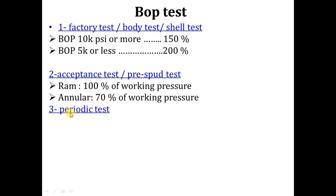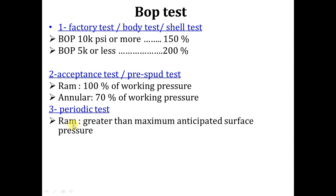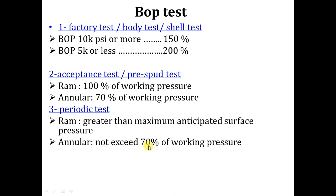There is also a periodic test — a test for the BOP done periodically while we are drilling and making operations on a well. It takes plus or minus two months. For the periodic test: number one, the RAM test must be greater than the maximum anticipated surface pressure. Number two, the annular must not exceed 70% of the working pressure.